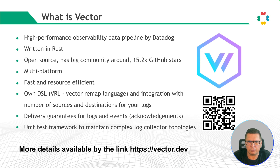If you check their website, you will find that Datadog describes Vector as a high-performance observability data pipeline that puts organizations in control of their observability data. You can collect, transform, and route all your logs, metrics, and traces to any vendors you want today and any other vendors you may want tomorrow. Vector enables dramatic cost reduction, novel data enrichment, and data security where you need it, not where it is most convenient for your vendors.